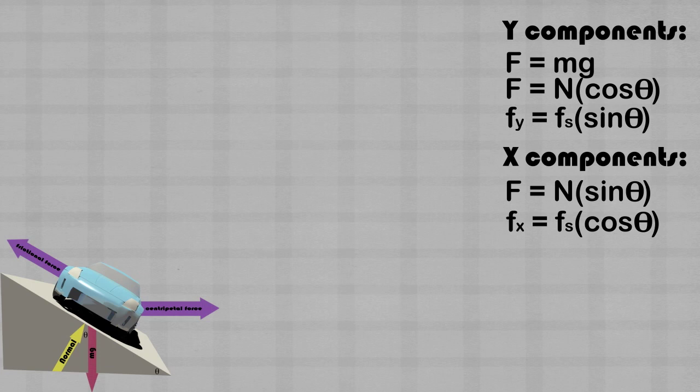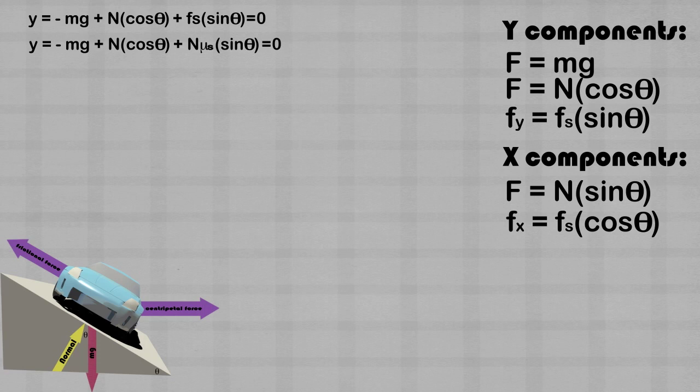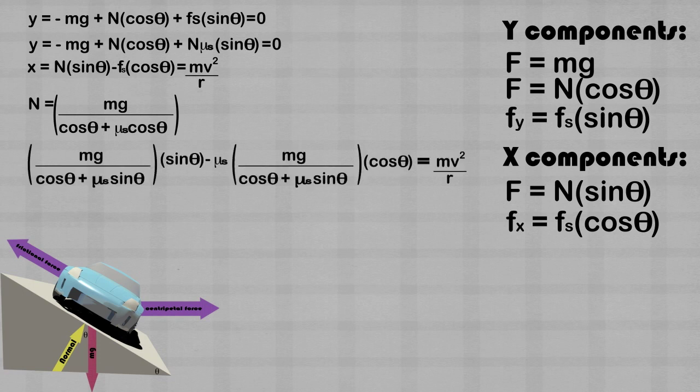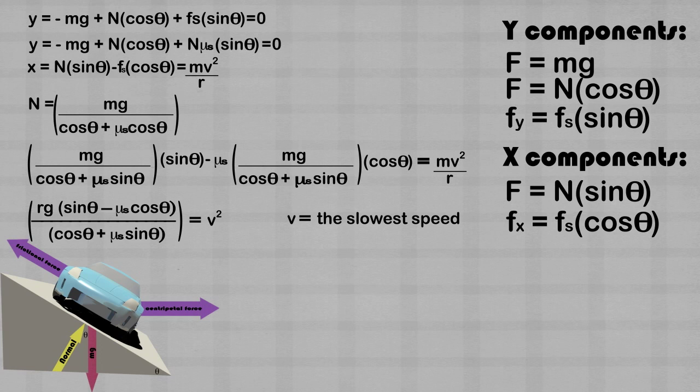Let's set up our equations involving y components. Since the car does not move in the y direction, the sum of the forces must be zero. The downward direction of gravity opposes the upward direction of the normal and frictional force. Similarly, there is no movement in the x direction, so we can set our x components equal to the centripetal force mv squared over r. We solve for the normal force with our y equation. Then, we can substitute this in for the normal force in the x equation. We can now solve for v. Notice that the mass of the car cancels out of the equation. The v that we have solved for is the slowest speed necessary to safely make it around the inclined turn.